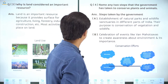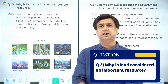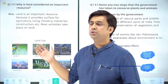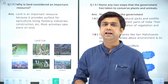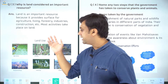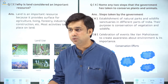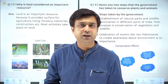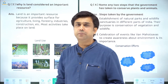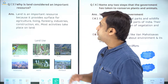The third question is: why is land considered an important resource? All our activities — farming, forestry, mining, building residential areas, roads, and industries — are carried out on land. We cannot do these in air or water. We need land for all of this. So land is an important resource because it provides the surface for all these activities.